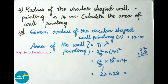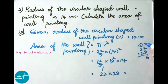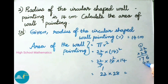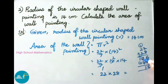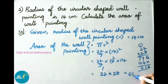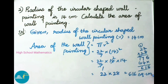Now let us do multiplication. 8 twos are 16, 6 carry 1. 8 twos are 16 plus 1 is 17. Now multiply by 2: 2 twos are 4, again 2 twos are 4. Do addition: 6, 7 plus 4 is 11, 1 carry 1, 1 plus 1 is 2, 2 plus 4 is 6. So the answer is 616 square cm. Therefore, the area of the wall painting is 616 square cm.